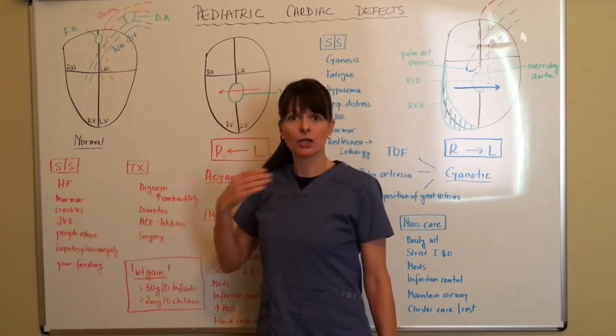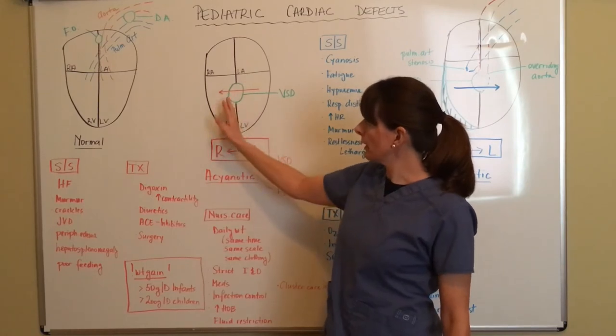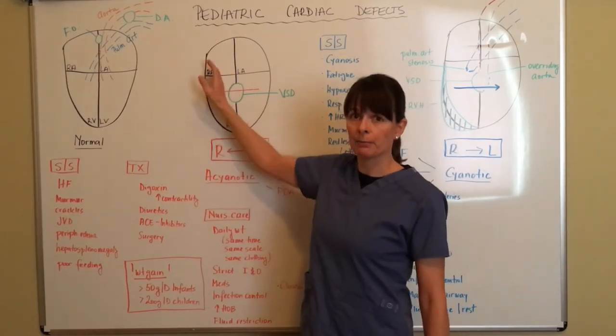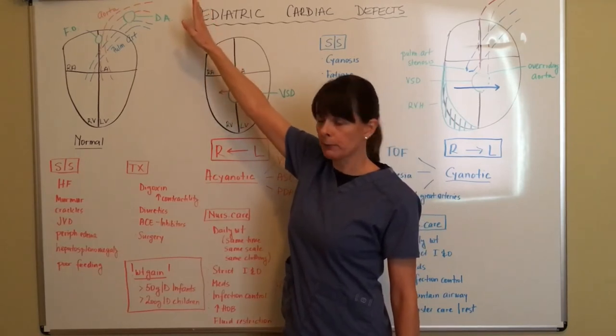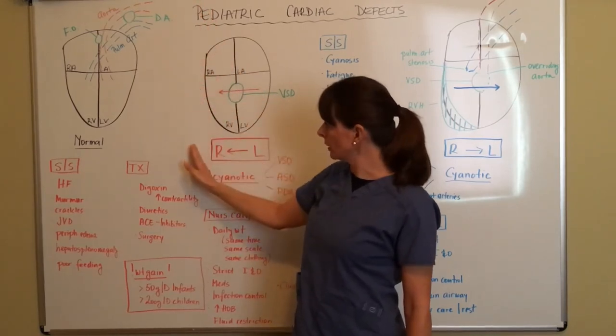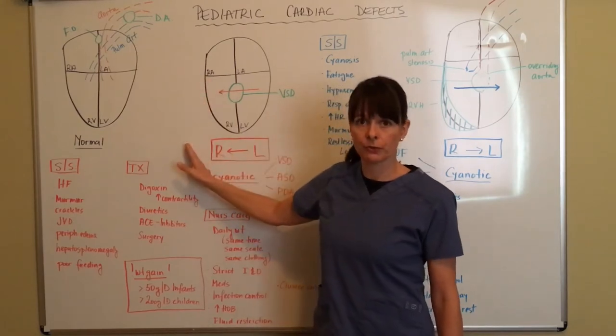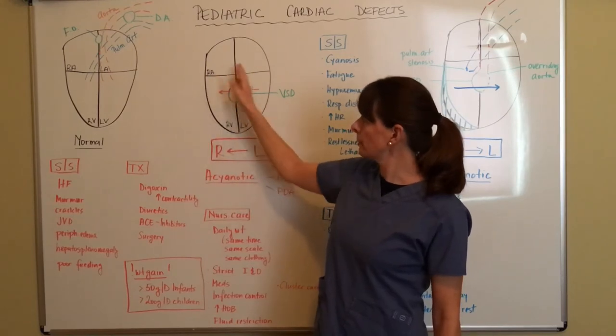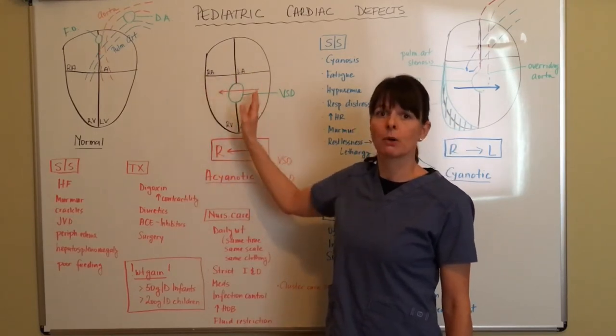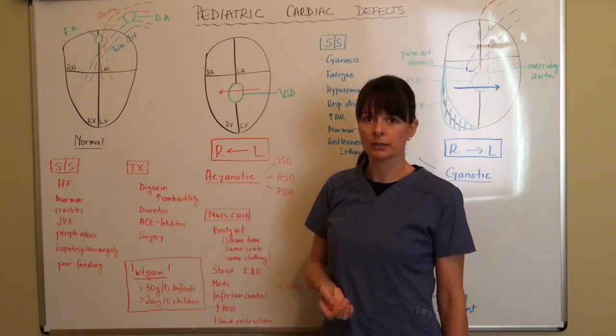There will be JVD, jugular venous distension, because the blood is being recirculated and then it can also back up into the periphery, causing jugular venous distension going back up to the brain. And then also it'll cause peripheral edema because it's backing up into the periphery here. In addition, because the blood is being circulated to the lungs multiple times, there will be crackles because of all this congestion that the patient has.